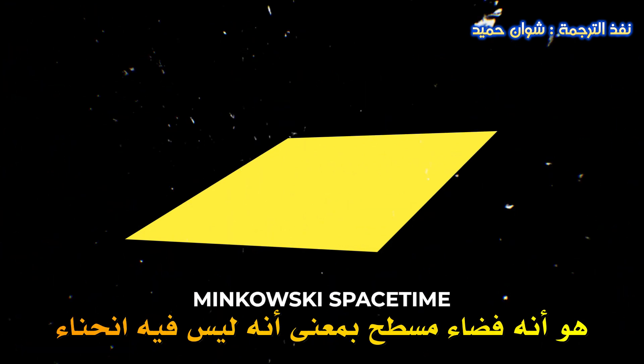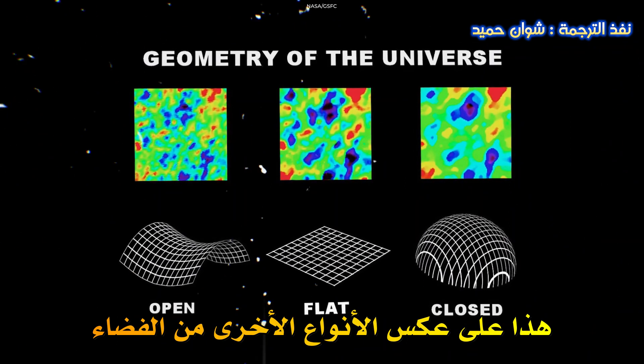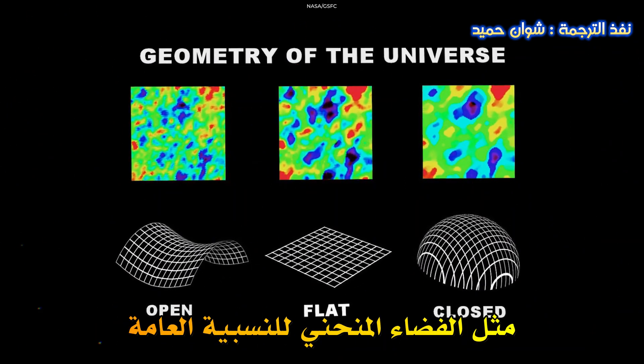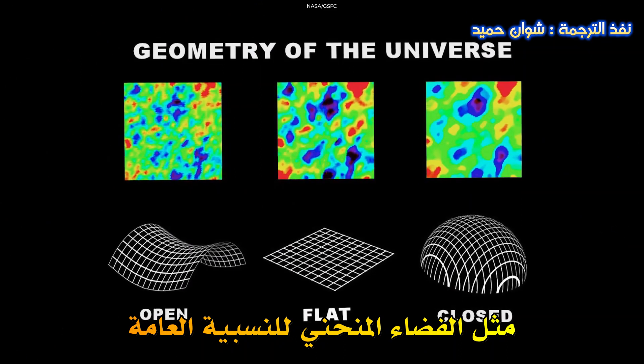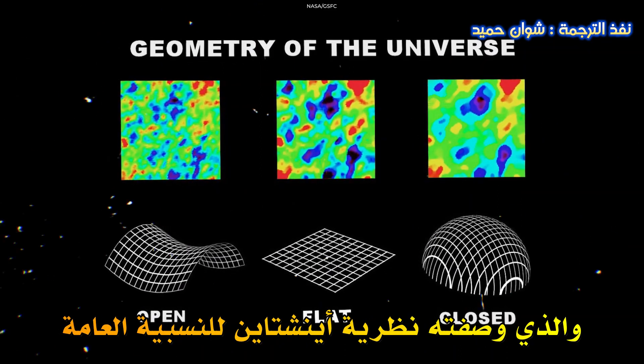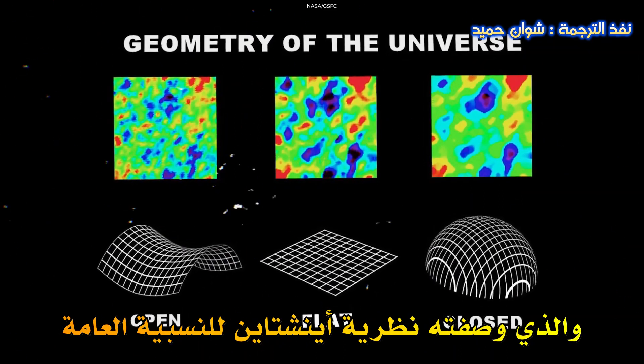One of the key features of Minkowski space is that it is a flat space, meaning that it has no curvature. This is in contrast to other types of space, such as the curved space described by Einstein's theory of general relativity.